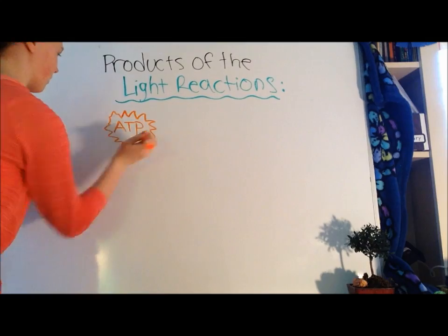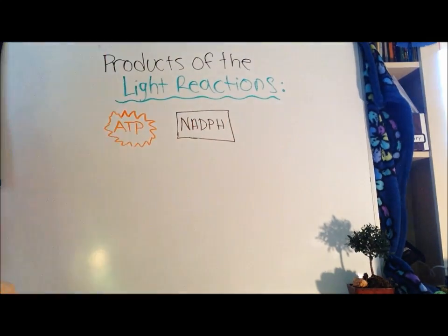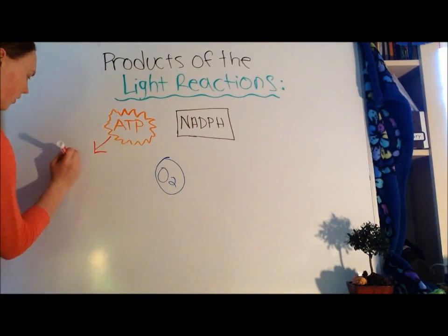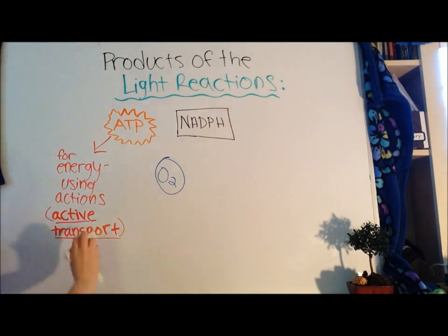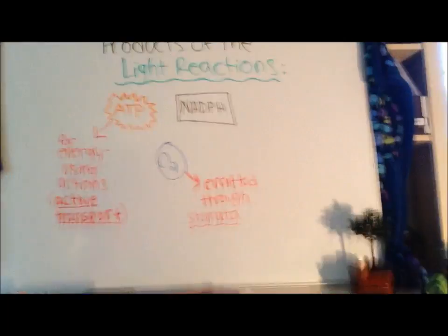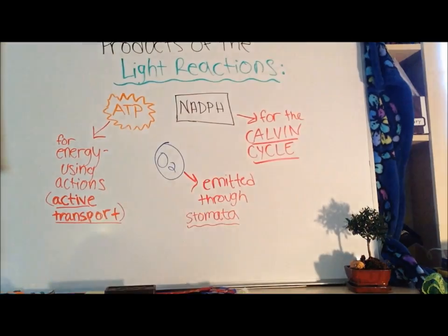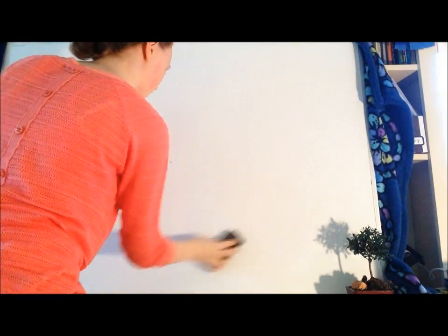So what did we accomplish? We formed molecules of ATP, NADPH, and oxygen. The ATP can be used for energy-using reactions, like active transport. The oxygen is emitted through the stomata, and the NADPH is used for the Calvin cycle.